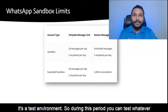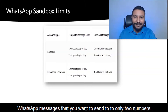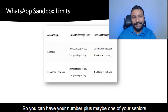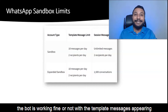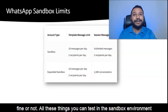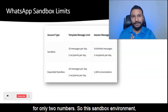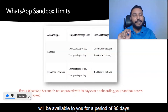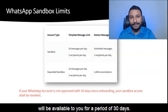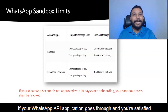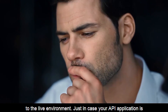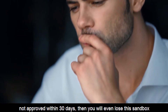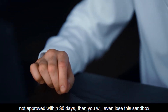It's a test environment. During this period, you can test whatever WhatsApp messages you want to send to only two numbers. You can have your number plus maybe one of your seniors or colleagues' numbers and start testing whether the bot is working fine with the template, whether messages are appearing fine — all these things you can test in the sandbox environment for only two numbers. This sandbox environment will be available to you for a period of 30 days. If your WhatsApp API application goes through and you've satisfied all the conditions, then you will move from the sandbox environment to the live environment. Just in case your API application is not approved within 30 days, then you will lose the sandbox access as well.